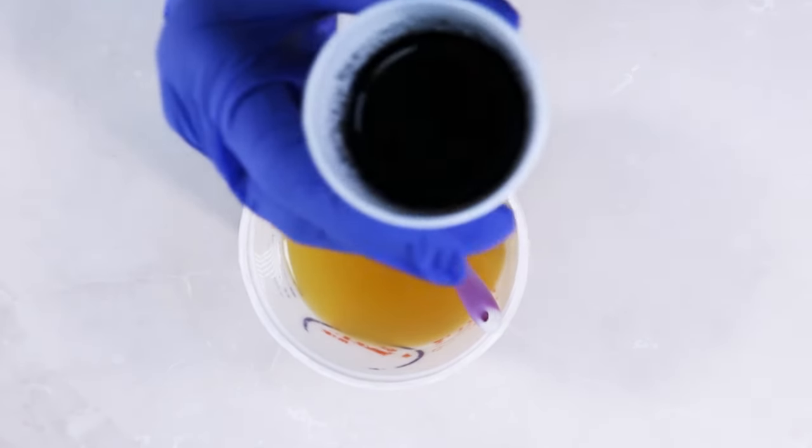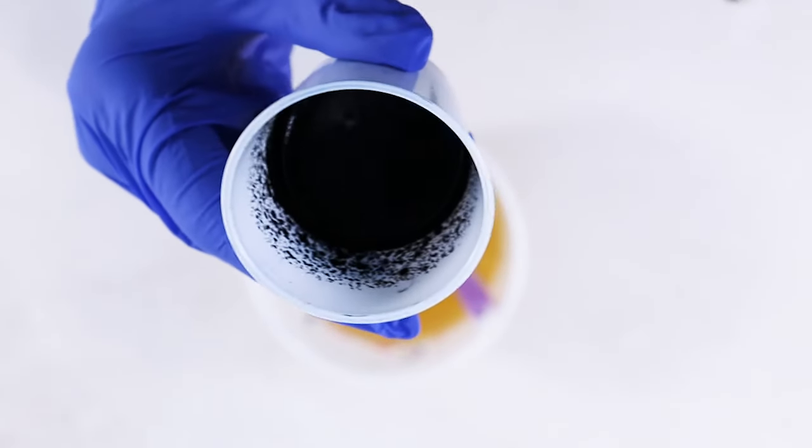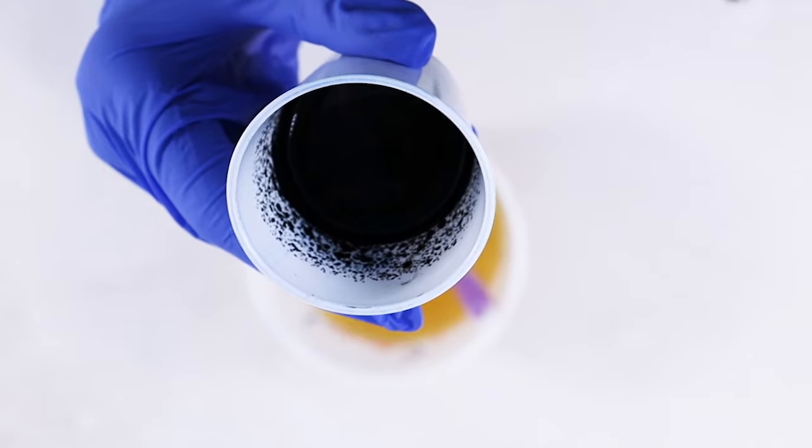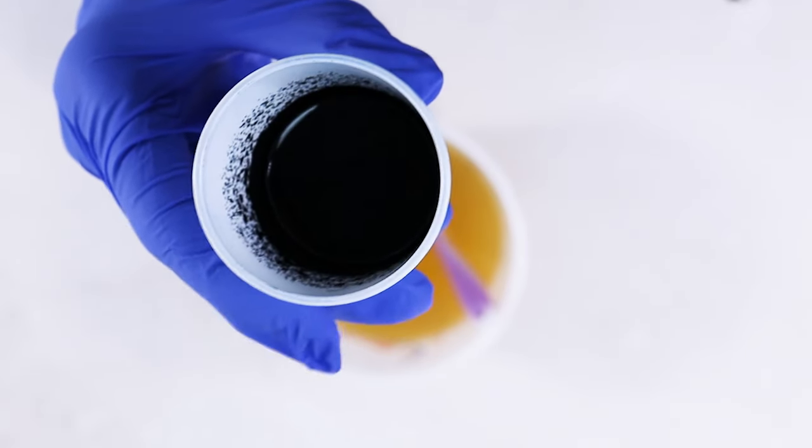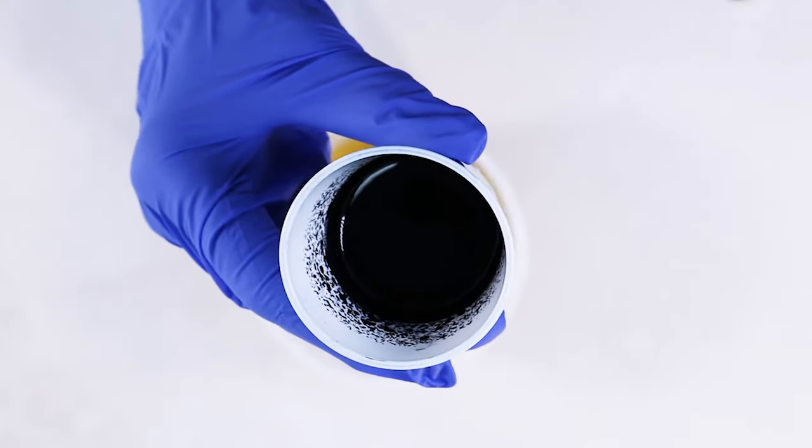I've got a combination of black mica and black oxide here. My usage rate is half a teaspoon per cup of soap and that's going to give me a nice, deep black color.